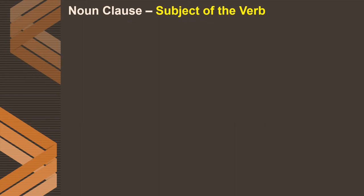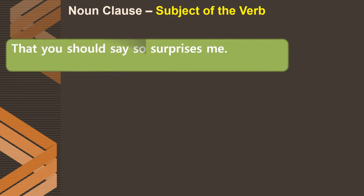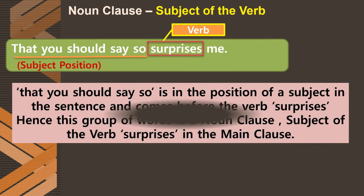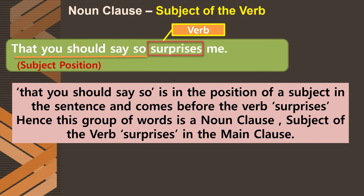The third type is the noun clause as subject of the verb. Subject comes at the beginning of a sentence. For example: 'That you should say so surprises me.' The question 'what surprises me?' is answered by 'that you should say so,' which comes before the verb 'surprises.' Therefore, it is called the noun clause, subject of the verb 'surprises' in the main clause — 'that you should say so' is in the subject position and comes before the verb.